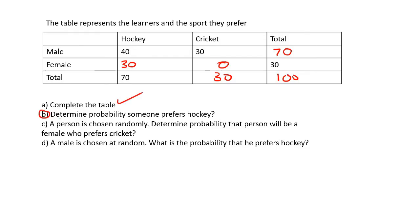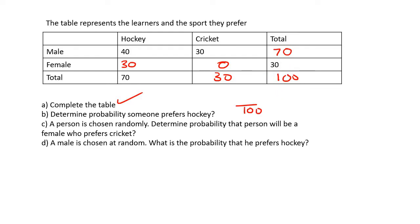This question says: determine the probability that someone prefers hockey. There are 100 people in total. Out of the 100, how many prefer hockey? It doesn't matter if they're male or female — we go to the hockey total over here, and you can see that the hockey total is 70. So the probability is 70 out of 100, which simplifies to 7 out of 10.